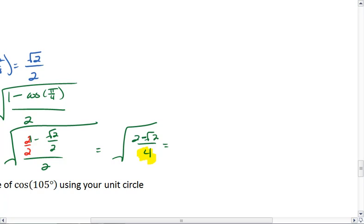We can pull the 4 out from underneath the root sign, however, that does mean we need to take the square root of it. So we get 1 half out front, and then square root 2 minus root 2. And that is as far as we can go with sine.